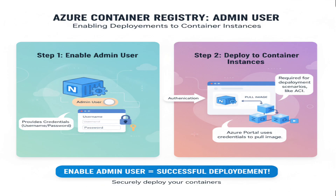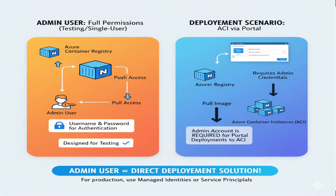When you enable the admin user, Azure Container Registry provides you with a username and password that can be used for authentication. This is particularly important when deploying through the Azure portal, as the portal needs these credentials to authenticate with the private registry and pull the container image during deployment. The admin account has full permissions to the registry, including both push and pull access. While it's designed primarily for testing purposes and single-user scenarios, it's currently the required authentication method for portal-based deployments to Azure Container Instances. Once enabled, you can use the admin credentials in your deployment configuration to successfully pull and deploy Image 1 from Registry 1.